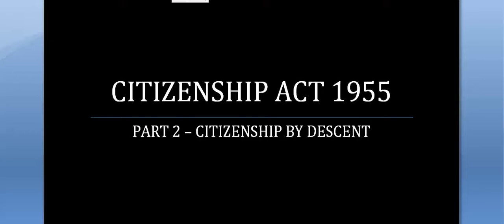Hello everyone, today we are going to study about the Citizenship Act Part 2. In Part 1 we discussed how one can acquire citizenship by birth — that person should be born in India. Now if that child is not born in India and wants to acquire the citizenship of India, that can be done through descent. So that's what we are talking about: getting citizenship by descent.